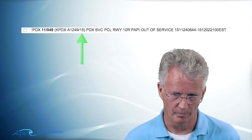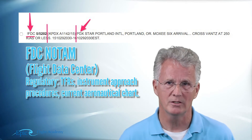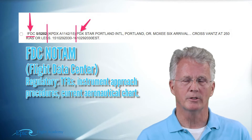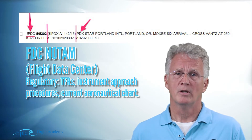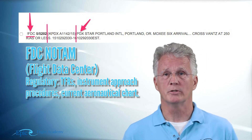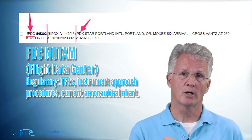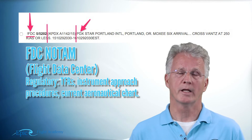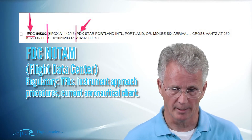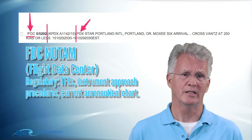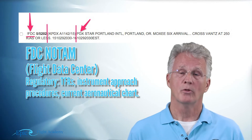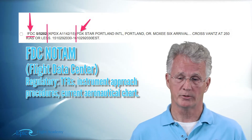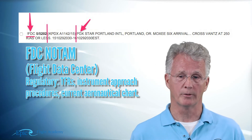Now let's look at an FDC NOTAM example. There are a few minor differences — it still starts with the exclamation point, but immediately after that exclamation it's not an accountable location; it is Foxtrot Delta Charlie — FDC — indicating a Flight Data Center NOTAM. After the FDC we will then see the accountable location and the rest of the NOTAM information with keywords.